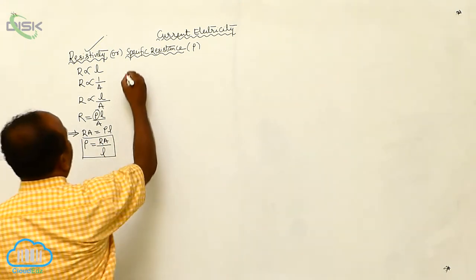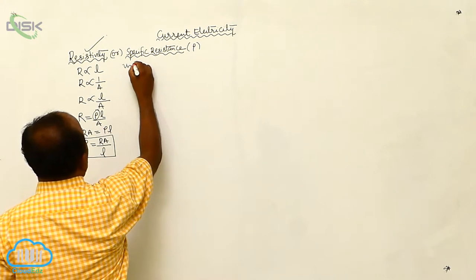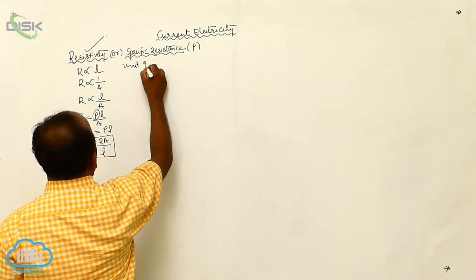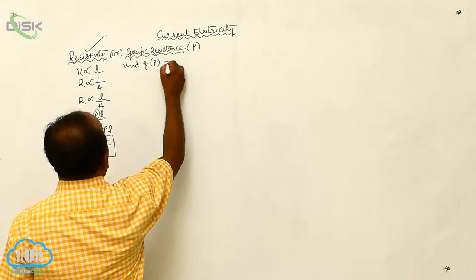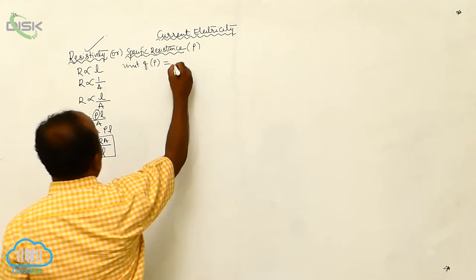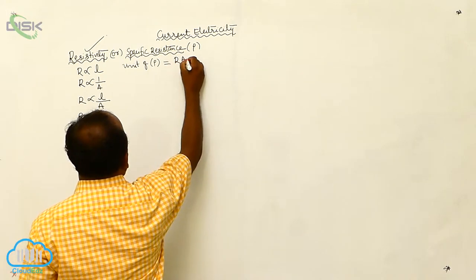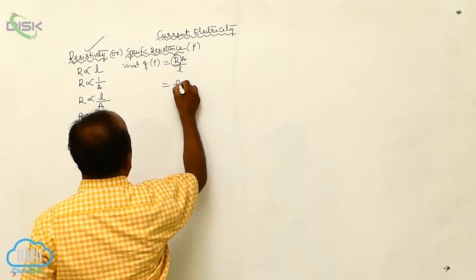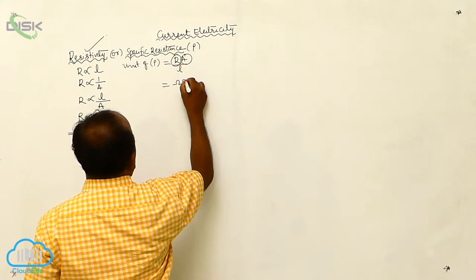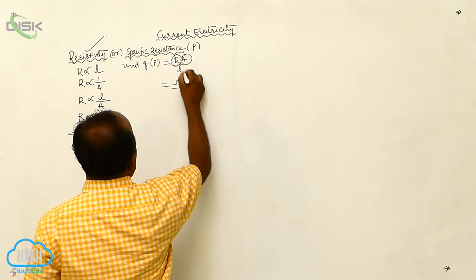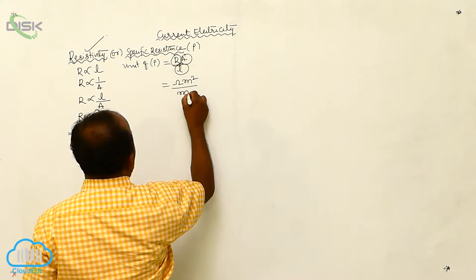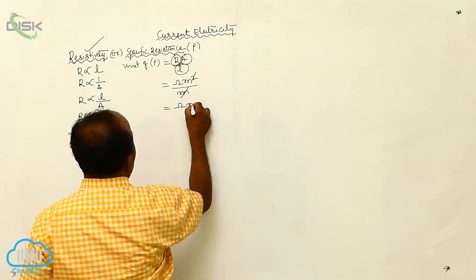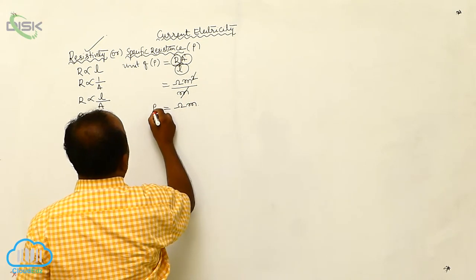What is the unit of resistivity? Using the formula rho equals R times A divided by L: R has unit Ohm, A has unit meter square, L has unit meter. Meter gets cancelled, giving Ohm into meter as the unit of resistivity.